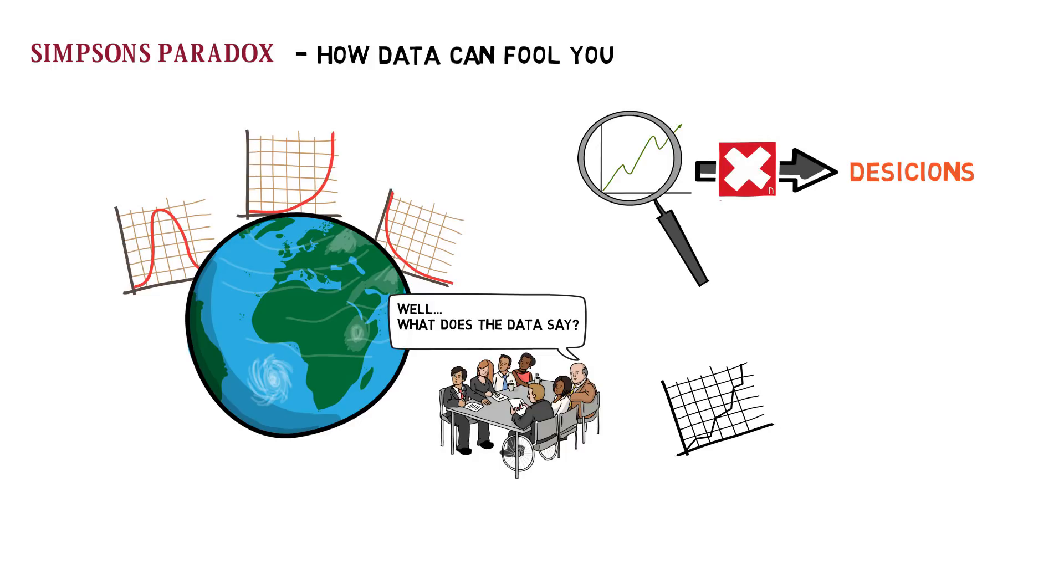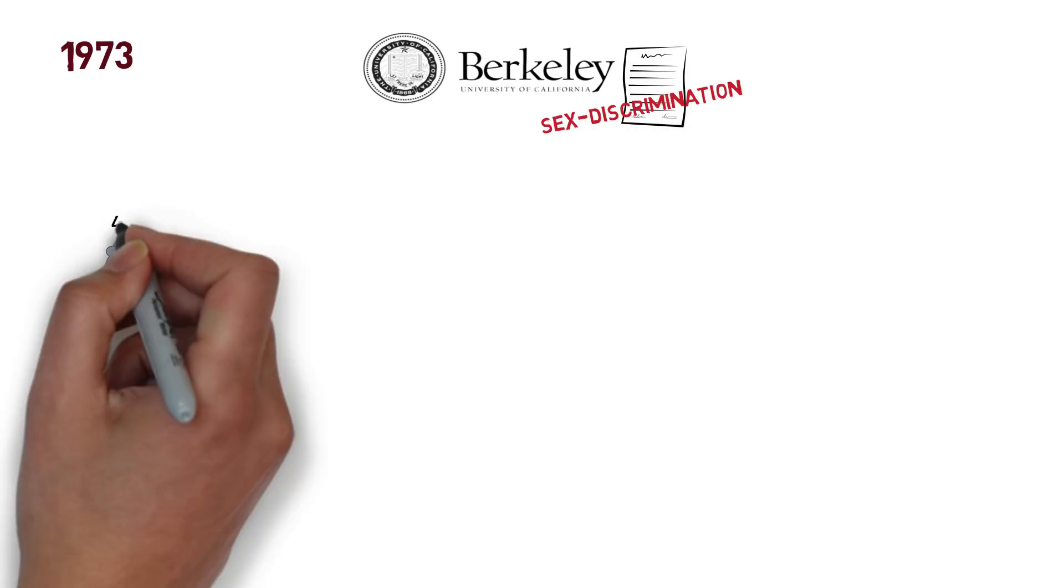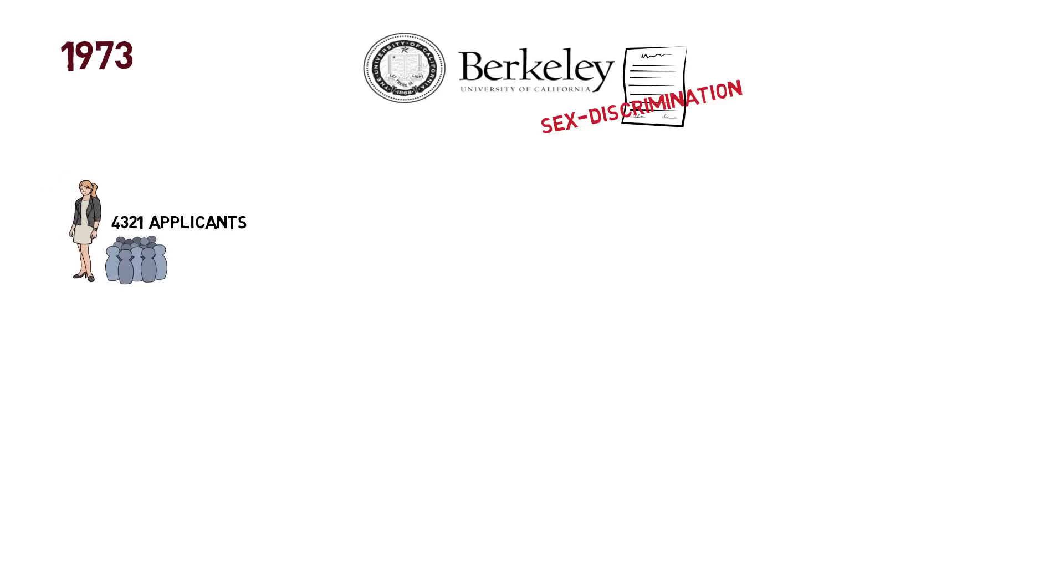In 1973, UC Berkeley was sued for sex discrimination. It turned out, out of all the female students who applied, only 35% of them were admitted, while out of all the male students who applied, 44% of them were admitted. The data raised a lot of eyebrows, and the witch hunt was on.